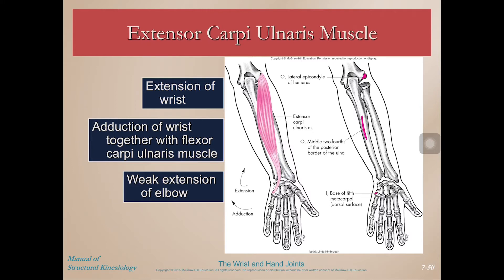Now the extensor muscles. Extensor carpi ulnaris will extend the wrist and cross on the ulnar side. We see it on the posterior aspect crossing on that ulnar side. It does extension, and it also does ulnar deviation or adduction of the wrist — moving the wrist towards the midline in anatomical position — as well as weak extension of the elbow. So wrist extensor muscles also contribute weakly to elbow extension.